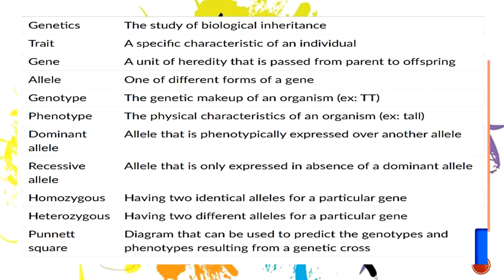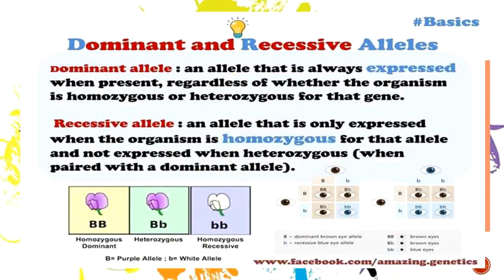Those are the terminologies that you have to remember. Once you master all of these, we're pretty close to achieving our learning competency. A dominant allele is an allele that is always expressed when present, regardless of whether the organism is homozygous or heterozygous for that gene. On the other hand, a recessive allele is only expressed when the organism is homozygous for that allele — it is not expressed when heterozygous, that is, when paired with a dominant allele.